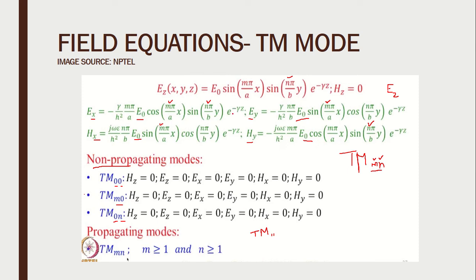When we substitute M=1 and N=1, we get certain non-zero field component values. This is the smallest value of a propagating mode, which is the TM11 mode. For any value of M greater than or equal to 1 and N greater than or equal to 1, the mode is propagating in nature. When M=0 or N=0, all field components vanish and the mode is non-propagating. When M and N are both at least 1, the field components exist and these are called propagating modes.